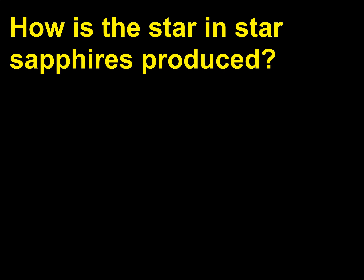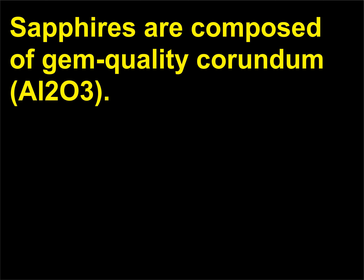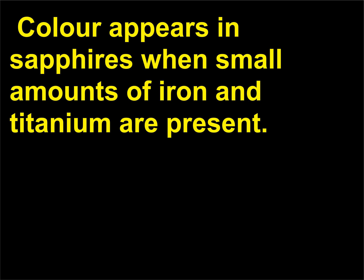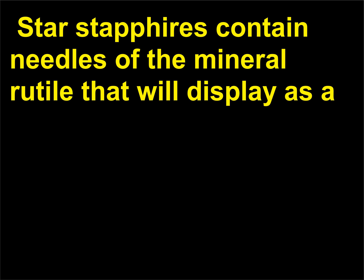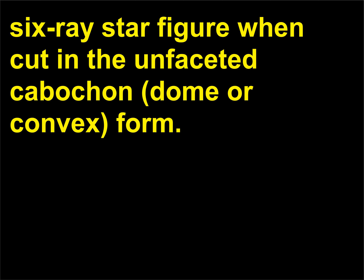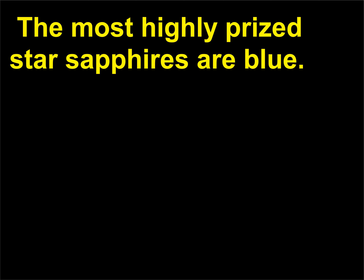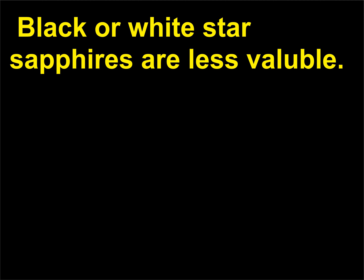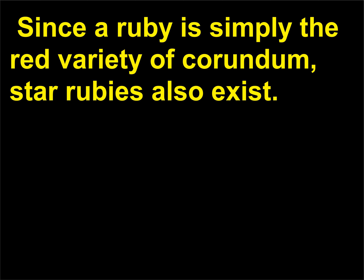How is the star in star sapphires produced? Sapphires are composed of gem quality corundum, Al2O3. Color appears in sapphires when small amounts of iron and titanium are present. Star sapphires contain needles of the mineral rutile that will display as a 6-ray star figure when cut in the unfaceted cabochon, dome or convex, form. The most highly prized star sapphires are blue. Black or white star sapphires are less valuable. Since a ruby is simply the red variety of corundum, star rubies also exist.